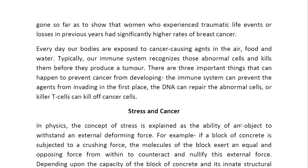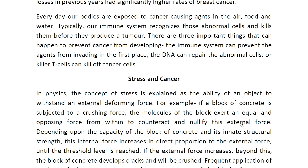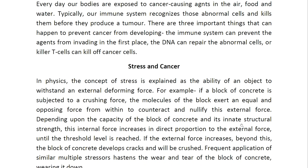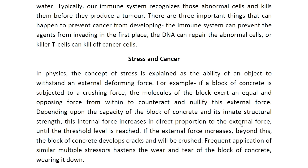Every day our bodies are exposed to cancer-causing agents in the air, food and water. Typically our immune system recognizes those abnormal cells and kills cancer cells, preventing them before they produce a tumor. There are three important things that can happen to prevent cancer from developing: the immune system can prevent the agent from invading in the first place, the DNA can repair the abnormal cells, or killer T cells can kill off cancer cells.